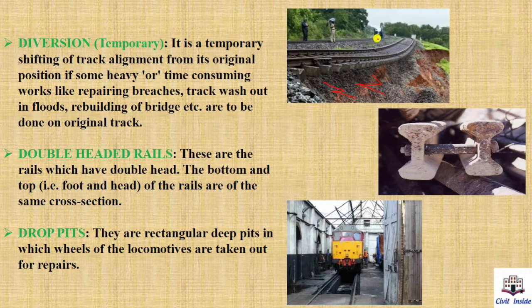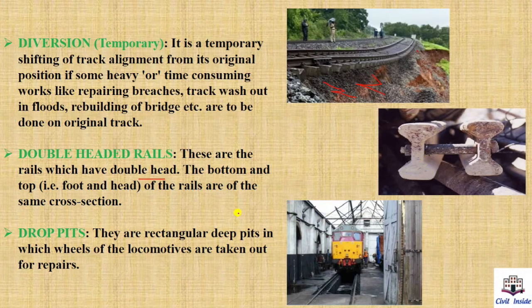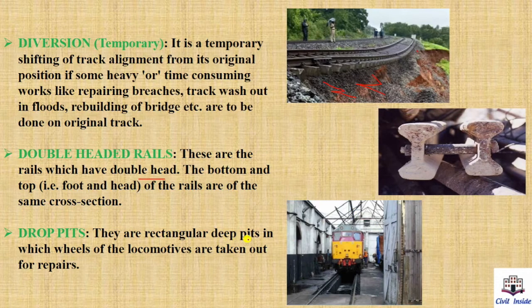Next, double-headed rails. These are the rails which have a double head — as we called them bull-headed rails in the first lecture. The foot and head have the same cross-section. Next, drop pits. Drop pits are rectangular deep pits in which the wheels of locomotives are taken out for repairs. These are large rectangular pits that give space to work underneath locomotives.